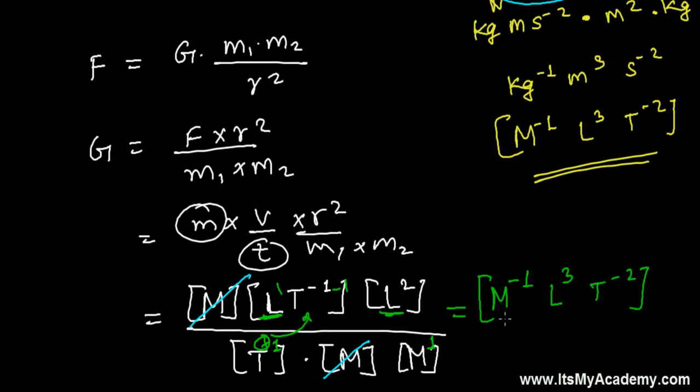So the dimensional formula of universal gravitation constant is M to the power minus 1, L to the power 3, and T minus 2. It means minus 1 dimension is in mass, 3 dimension in length, and minus 2 dimension in time.